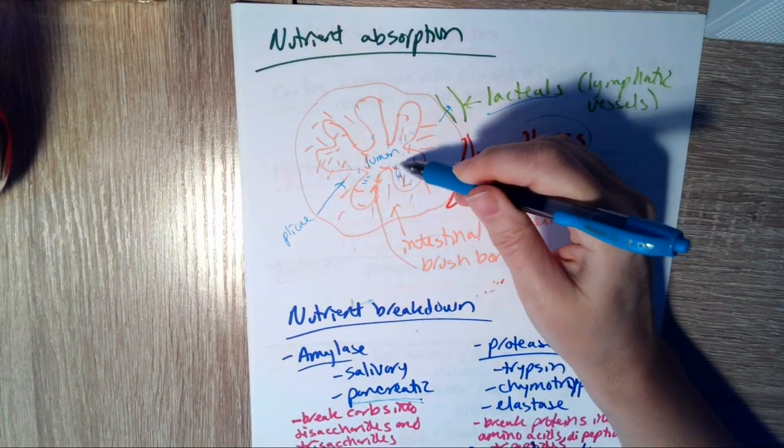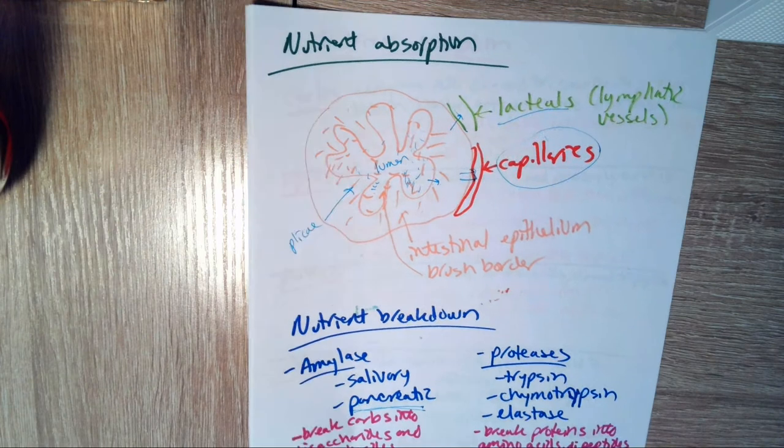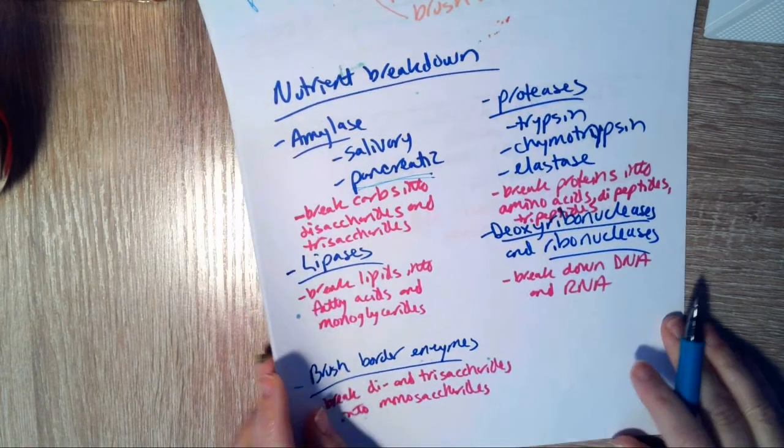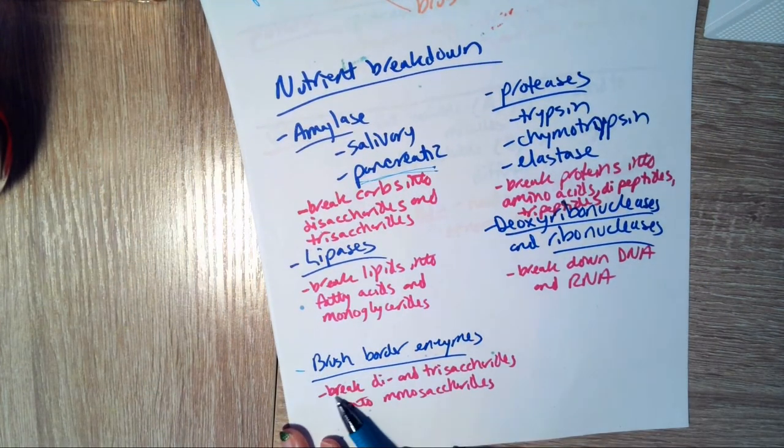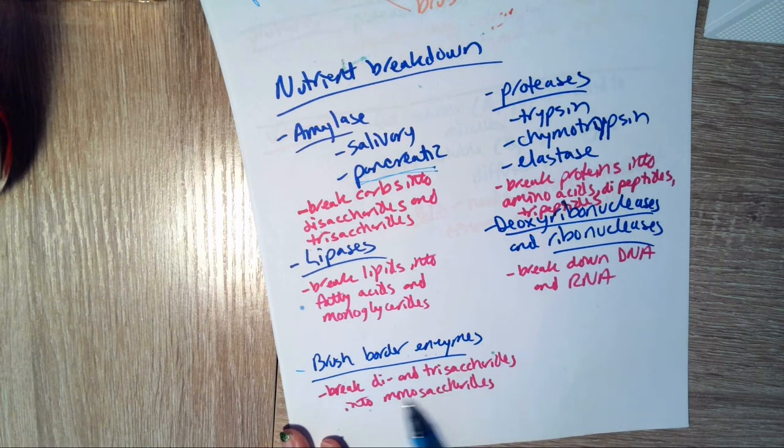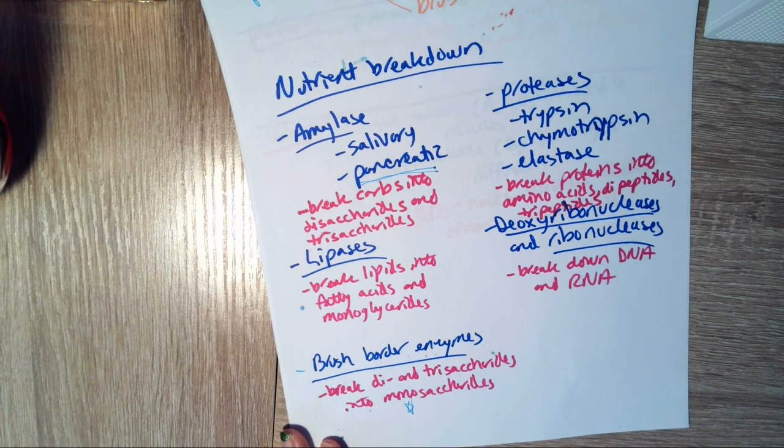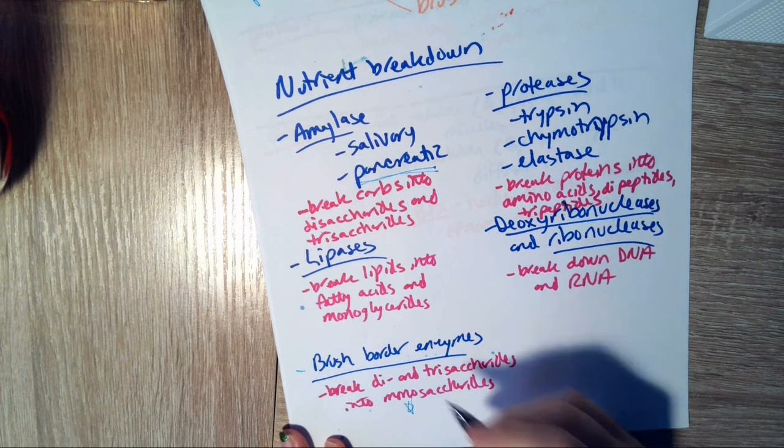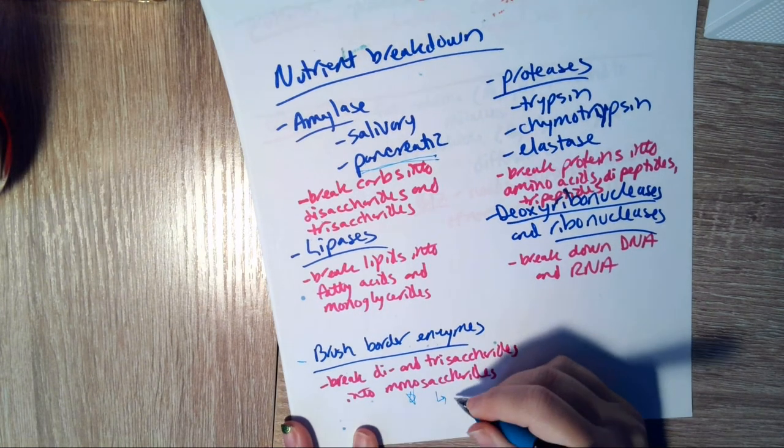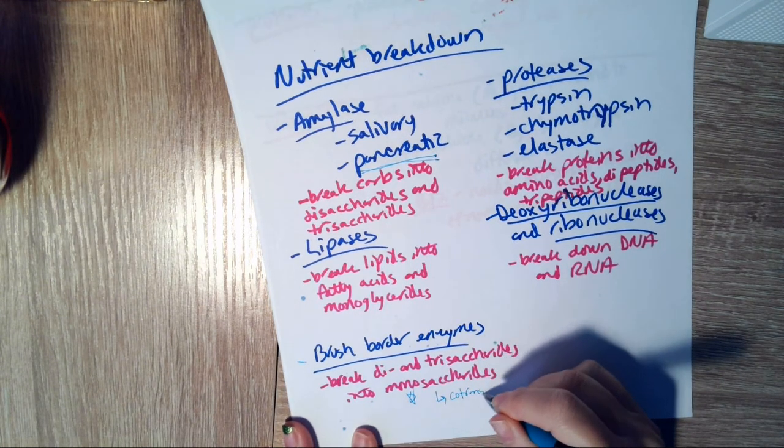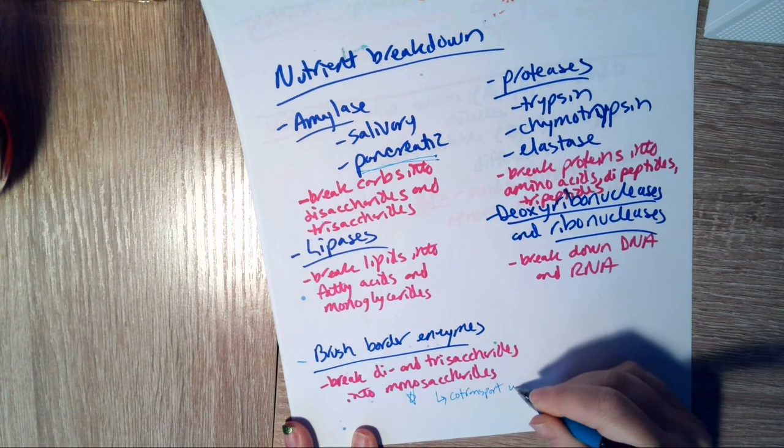Brush border enzymes, which are made by these little microvilli that are sticking out all over the place in the lumen of the intestine. These brush border enzymes will break down the di- and trisaccharides into monosaccharides. Those are what are small enough to go into the cells.